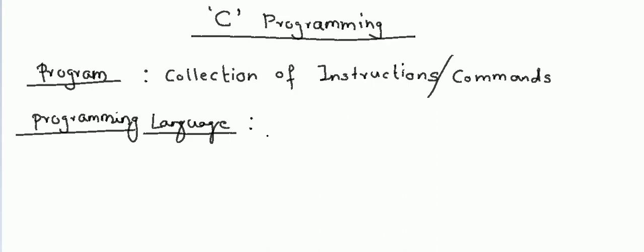A programming language allows us to write commands, and whenever we write these commands we follow some grammatical rules, we follow some syntaxes — all these things define a programming language. First we will learn how to write a single instruction, then how to write a single program. A collection of multiple programs will be called software, but you have to follow some order to combine these instructions and programs.